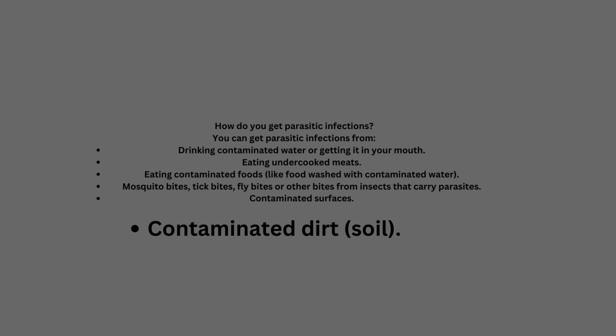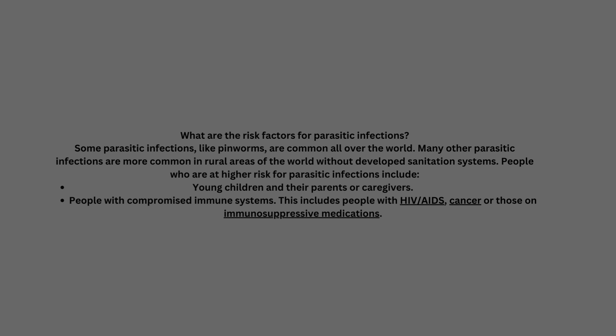You can get parasitic infections from drinking contaminated water, eating uncooked meats, eating contaminated food like food washed with contaminated water, mosquito bites, tick bites, flea bites or other bites from insects that carry parasites, and contaminated surfaces like dirt and soil.